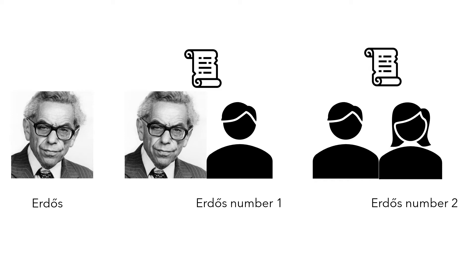Do you remember Paul Erdős, who was a prolific mathematician? Over his lifetime, Erdős published over 1,500 papers with 507 co-authors. His famous quote was, 'A mathematician is a machine that turns coffee into theorems.' It was an honor to co-author with such a genius, so mathematicians introduced the Erdős number to track how close they were to Erdős in the co-authorship network.